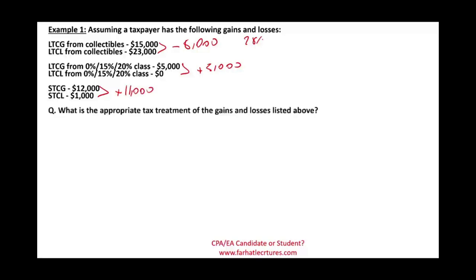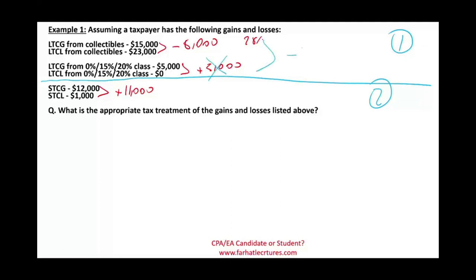What is the appropriate tax treatment? Think of them as playing in two different leagues: long-term and short-term. Before you move into the other league, you have to clear your own category. The $8,000 loss from the 28% category first knocks out the $5,000 gain in the 0/15/20% category. As a result, we still have a remaining negative $3,000. We are done with the long-term league. Now this $3,000 can clear $3,000 of the short-term capital gain, and what we're left with is a positive $8,000 short-term capital gain.